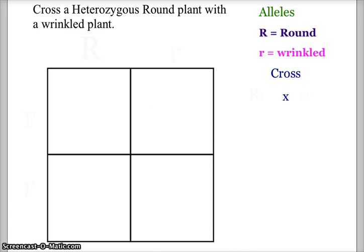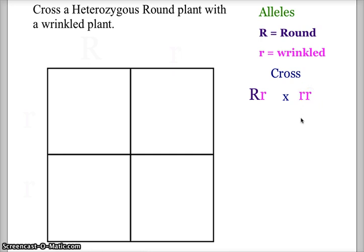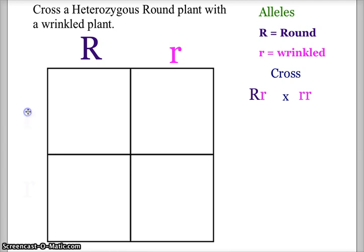Let's do another example. Here we have a cross between a heterozygous round plant and a wrinkled plant. Capital R is round and lowercase r is wrinkled. The first parent is heterozygous for round, with a genotype of capital R, lowercase r. The second parent has the recessive trait and is therefore homozygous recessive: lowercase r, lowercase r. We begin by segregating the alleles for the first parent on top, and the second parent on the left.